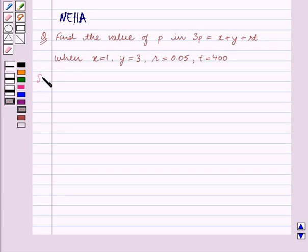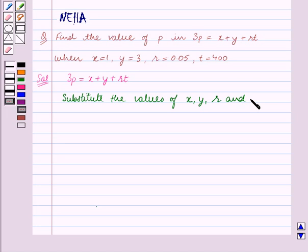Now we are given 3p = x + y + rt. Substitute the values of x, y, r, and t in the above formula.